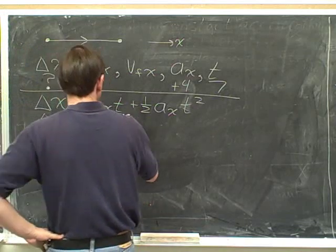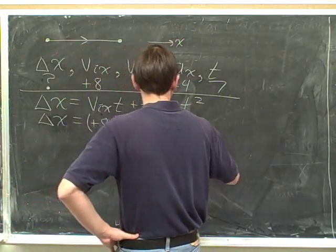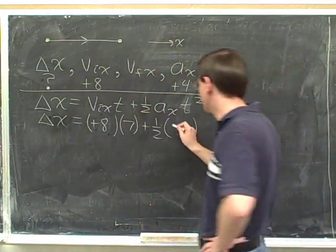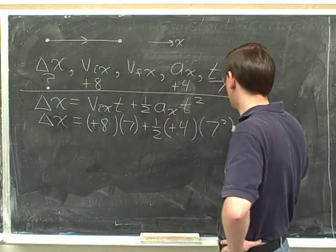And then our time is going to be 7 plus 1 half times the acceleration. Don't write down 4. Write down positive 4. And then the time squared. So that would be 7 squared.